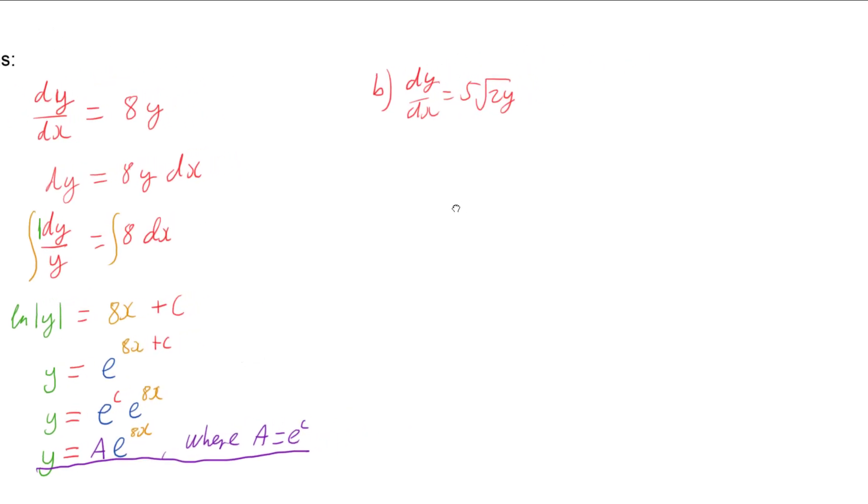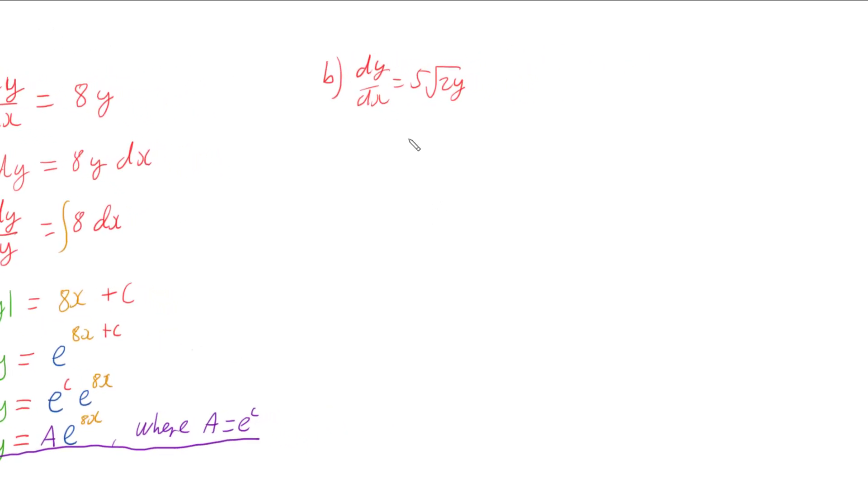And if we do the same as we did with our first one, we can have dy over the square root of 2y equals 5 times dx.